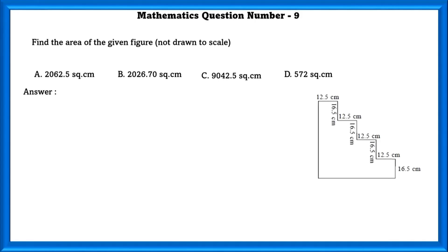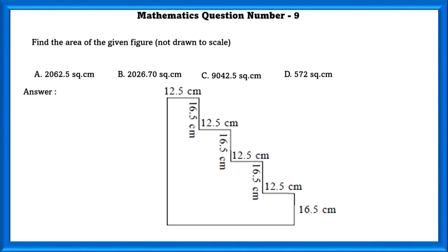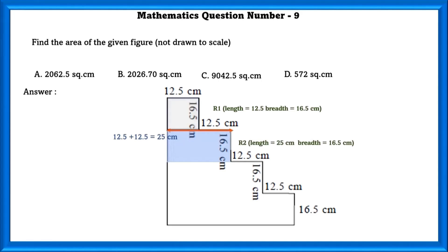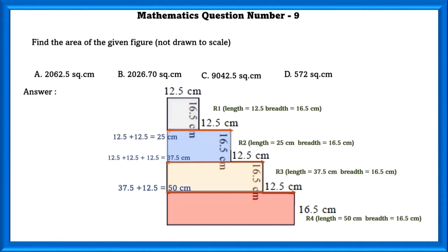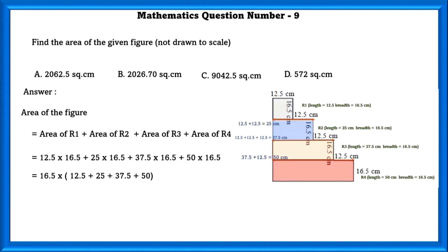Mathematics question number 9. Find the area of the given figure, not drawn to scale. We can divide the figure into small rectangles and then find the area. Rectangle 1 has length 25.5 cm and breadth 16.5 cm. Rectangle 2 has length 25 cm and breadth 16.5 cm. Rectangle 4 has length 50 cm. The area of the figure is equal to the area of rectangles 1 plus 2 plus 3 plus 4, that is 2062.5 square centimeters.